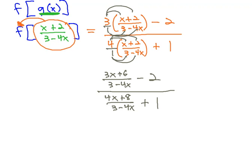that we can clear the compound fraction by multiplying each term in the numerator and denominator by the least common denominator of the little fractions. And the only little fraction denominator we have is 3 minus 4x.